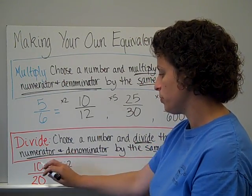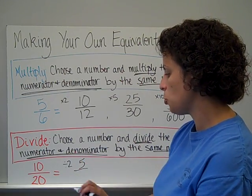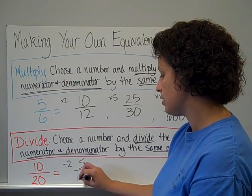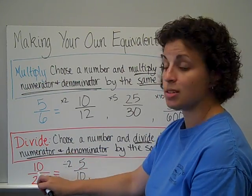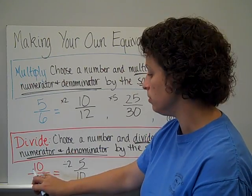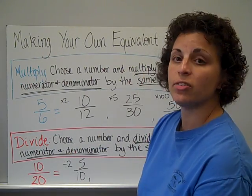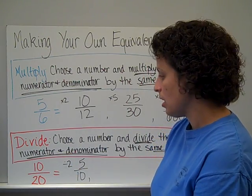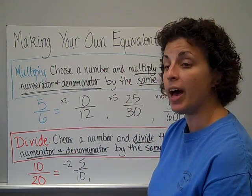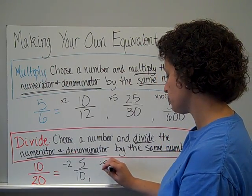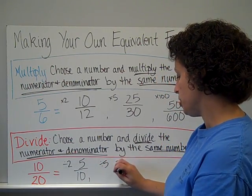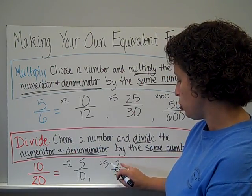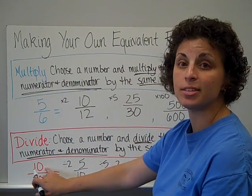Ten divided by two gets me down to five. Twenty divided by two, again we're doing the same thing, twenty divided by two is ten. So, five-tenths is the same as, or equal to, ten-twentieths. Could I divide by three? No, because ten divided by three doesn't work out. I can't do four, but I can do five. Ten divided by five is going to be two. Twenty divided by five is going to be four. So, two-fourths is the same as ten-twentieths as well.